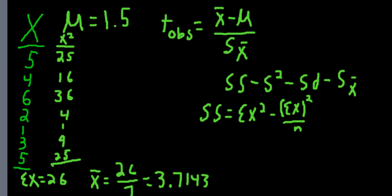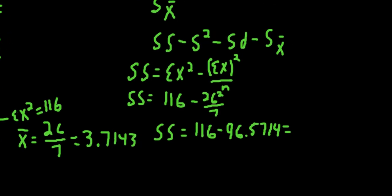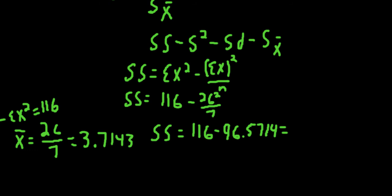If we add up all of the squared values for x, the sum of x squared, or sum of the squared x's I should say, is 116, so that's the sum of all the squared values for x. So we'll take that, sum of squares, is the sum of the squared x's, 116, minus the sum of x squared over n. So that's 26 squared over 7. So our sum of squares equals 116 subtract 96.5714, which gives us a sum of squares value of 19.4286.